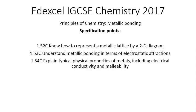So today's topic is metallic bonding. We'll be looking at specification points 1.52, 1.53 and 1.54, and you'll notice the C there on the specification denotes that these are part of the triple science part of the course. If you did double science you wouldn't need to do this content at all. We'll be looking at how to represent metallic lattices using a 2D diagram, understanding how metallic bonding relates to electrostatic attractions, and explaining the typical properties of metals including their electrical conductivity and malleability.